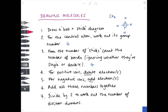Step four: for positive ions, delete electrons; for negative ions, add electrons. Now this obviously isn't an ion — it's methane, it's neutral — so this isn't relevant at this point. However, further examples will show when this becomes relevant. Step six: add all these numbers together. So we're simply adding four plus four in the case of methane, which is eight.